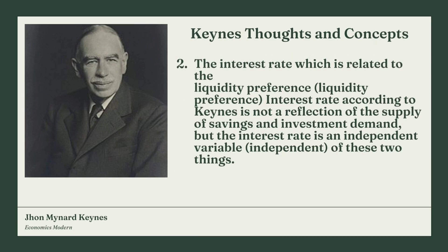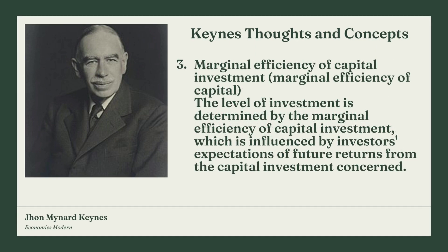Number two: the interest rate, which is related to liquidity preference. According to Keynes, the interest rate is not a reflection of the supply of savings and investment demand, but rather an independent variable from these two things. Number three: marginal efficiency of capital investment. The level of investment is determined by the marginal efficiency of capital investment, which is influenced by investors' expectations on future returns from capital investment sentiment.